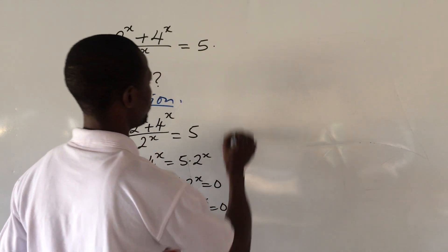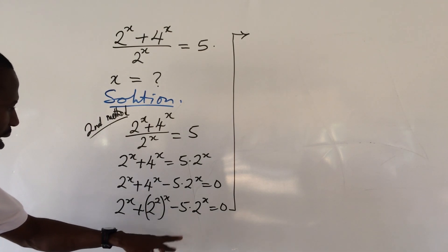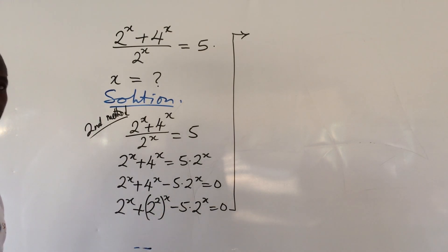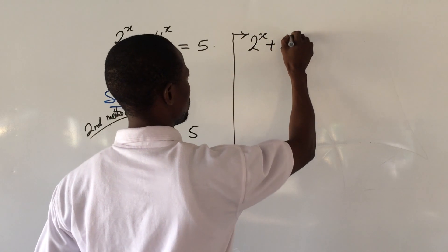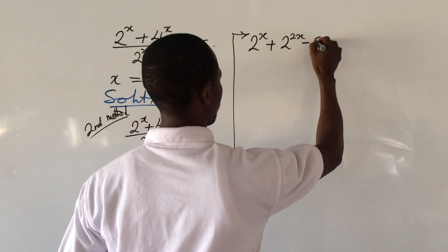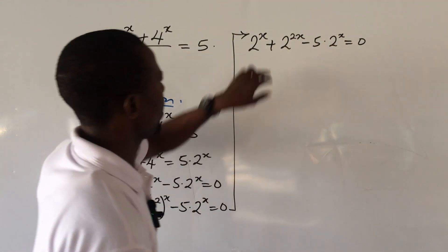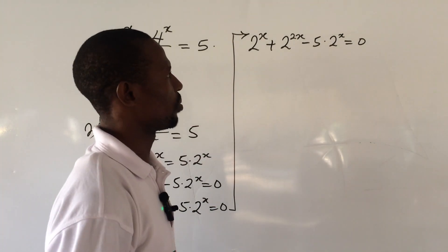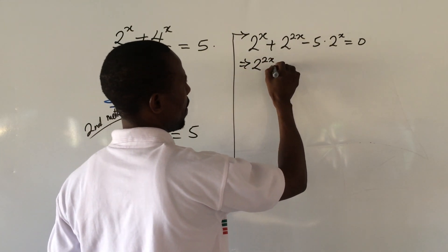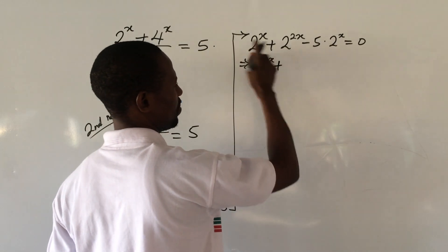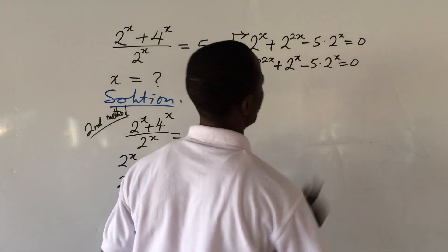Taking 5 · 2^x to the left side, we have 2^x + 4^x − 5 · 2^x = 0. We can expand 4^x as 2^(2x), so this becomes 2^x + 2^(2x) − 5 · 2^x = 0.